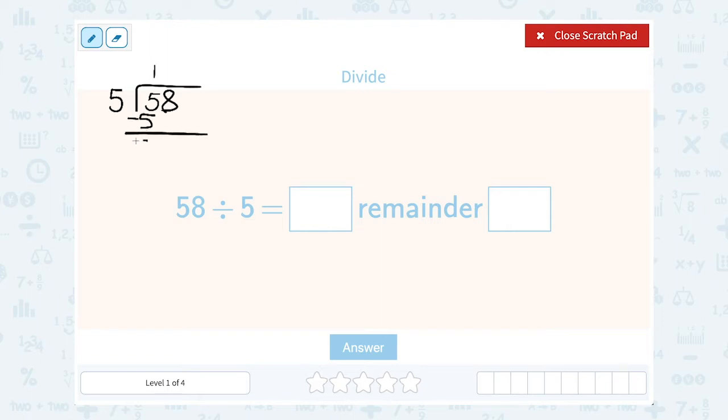Now I would bring down my next digit which is 8. Well, 5 only goes into 8 one time. 5 times 1 is 5, so if I subtract my 5 that means I have 3 left over. Now this number that I have left over would be my remainder.